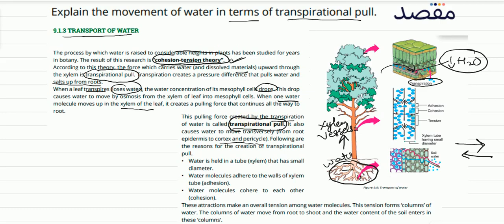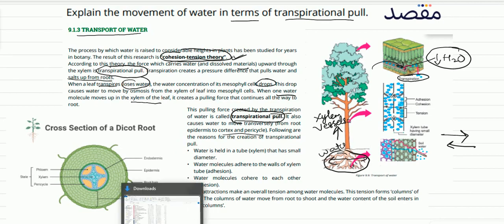Pulling is the reason for the creation of transpiration pull. Students, you can see here in the diagram there is a cross-section of a root. The epidermis is the outer layer, then you have cortex cells, and on the inside there are pericycle cells where the xylem, phloem, and other vascular tissues are located.